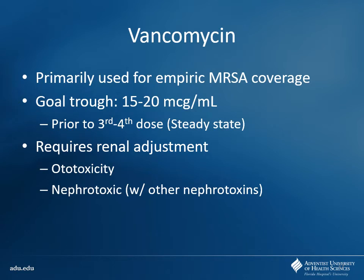I'm not going to have you memorize the actual levels, but I may put a question on a test where I'll give you a level and say what the reference range is. Or I may ask you why I'm shooting for a higher trough for pneumonia than for another type of infection — you still need to know that I'm going to higher doses because I need to get better penetration in the lungs. The blood level is just a surrogate for the level at other tissues. I can't check a lung level of vancomycin, so that's why we use that. Vancomycin is also ototoxic and nephrotoxic, especially with other meds on board. If I have a patient on vancomycin and gentamicin, I've got to watch the kidneys.